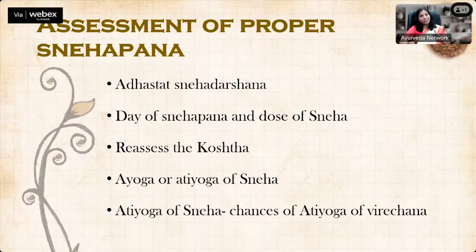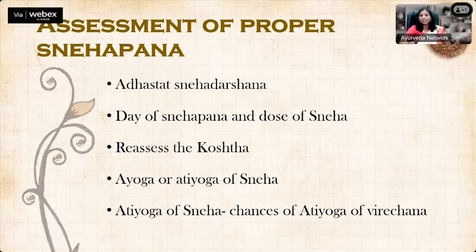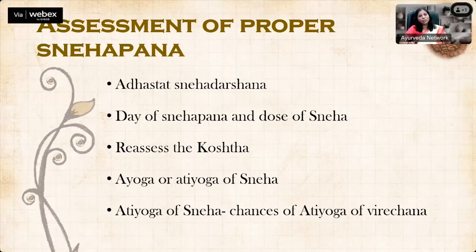Reassess the Koshtha during Sneha Pana — whether it is Mridhu, Krura, or Madhyama. We previously assessed by clinical and history assessment; here we assess by the medicine response — Upashaya. Ayoga or Atiyoga of Sneha must be assessed. If a patient gets appetite at 7 o'clock and we ask them to stop ghee, but the patient thinks '110 ml is not enough, I will take 150 ml' and takes more the next day — Atiyoga happens. In such cases there are chances of Atiyoga of Virachana as well — we must always be prepared for complications in Virachana when Atiyoga of Sneha occurs.